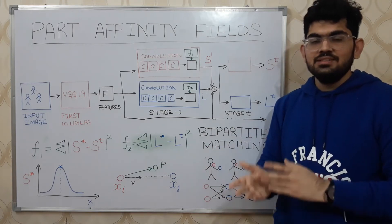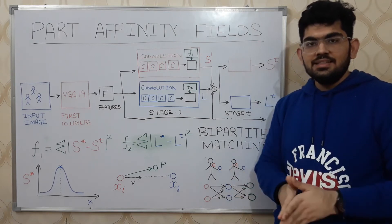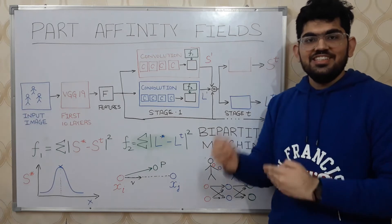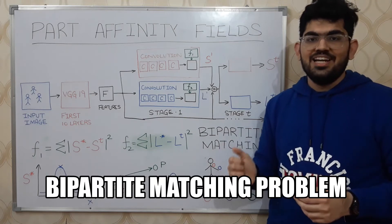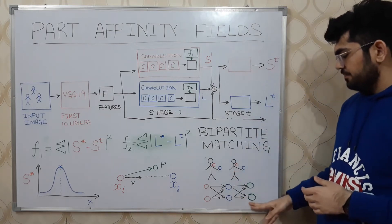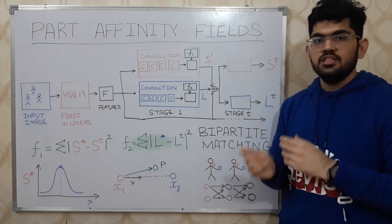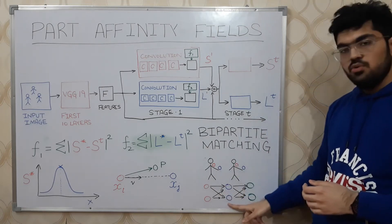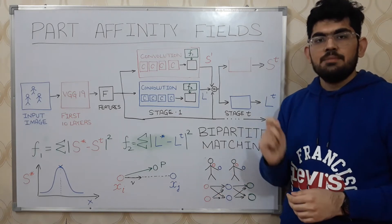Now we have the key points and a way to connect adjacent key points. The next step is to connect those adjacent key points to further adjacent key points. This connection is modeled as a popular computer science problem called bipartite matching. In bipartite matching, given any graph, we select edges such that no two edges share a node. For example, considering red and blue nodes with candidate edges, there would be two solutions to the bipartite matching problem.